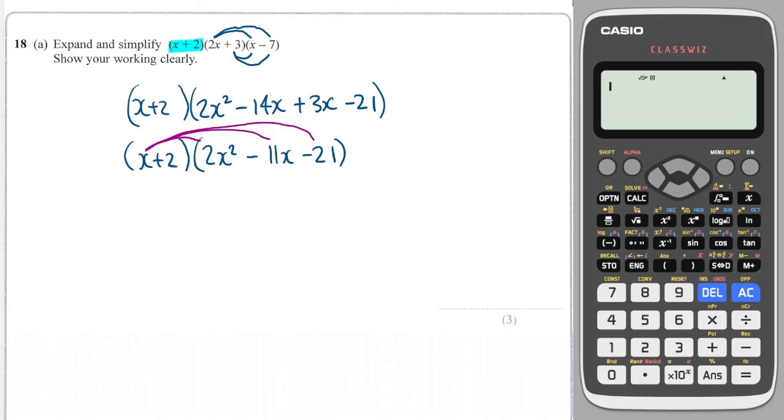By 2x cubed minus 11x squared minus 21x. And then I need to multiply everything by 2 as well.